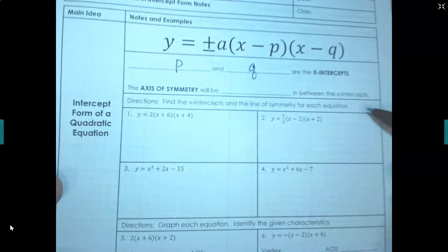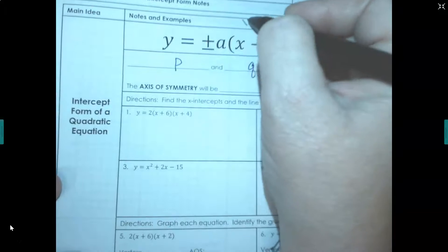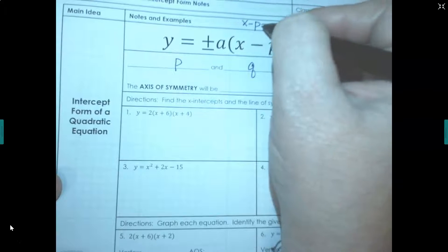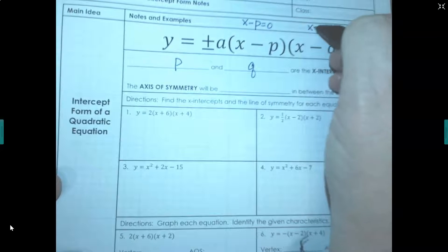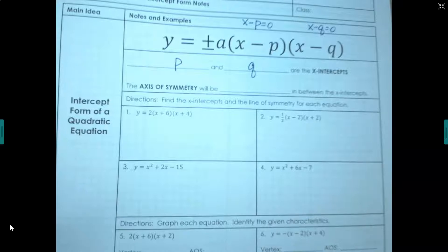Remember when we were doing our zero product property, when we were solving to find the x-intercepts, you would take each of those factors and set them equal to zero and solve them to find out what the actual x-intercepts are.